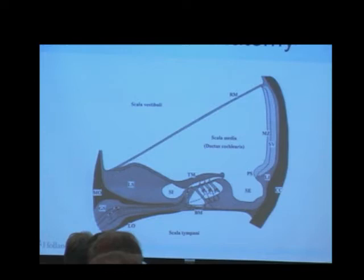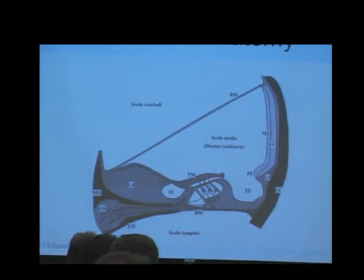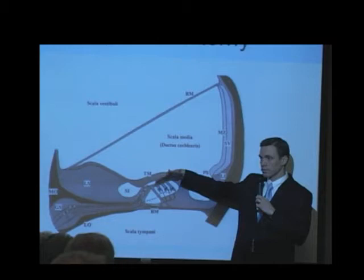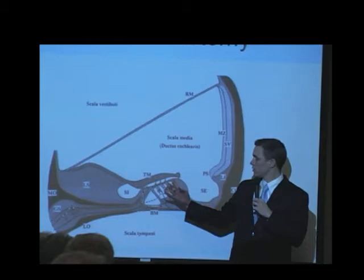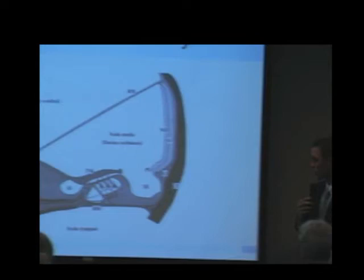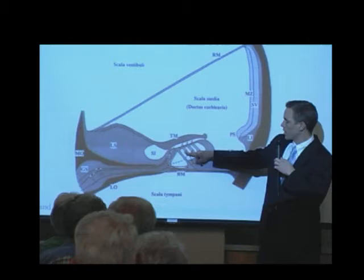Focusing in on the cochlea cross-section — here's the first tunnel where the plunger goes, called the scala tympani, and here's the middle tunnel, the scala media. As that fluid wave comes down, this membrane — called the basilar membrane — moves up and down. As it moves, these little rows of hair cells push up against this membrane. The nerves come in from the center and are attached to those hair cells. That's the switch — just like a light switch.